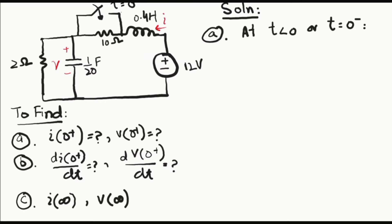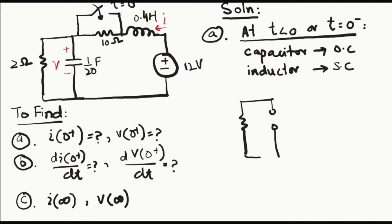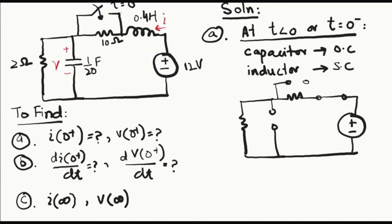First, when time is less than zero — just before the switching time — we assume steady state condition. At steady state, the capacitor acts as an open circuit and the inductor acts as a short circuit. We redraw the circuit by replacing the capacitor with an open circuit and the inductor with a short circuit. The switch was open when t is less than zero, so the capacitor branch is excluded and the inductor is short-circuited.